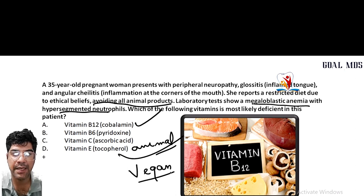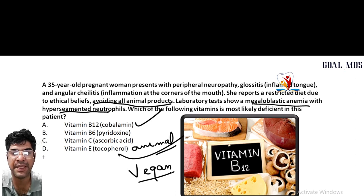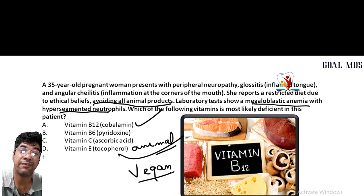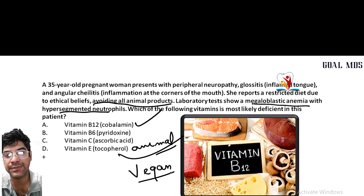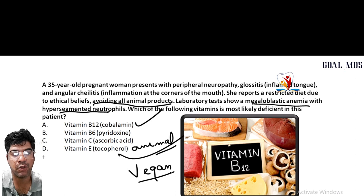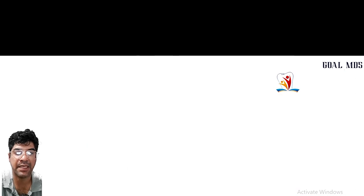Whereas other options — vitamin B6 deficiency can also lead to peripheral neuropathy, but the characteristic findings of megaloblastic anemia and hypersegmented neutrophils point toward B12 deficiency. Vitamin C deficiency causes bleeding gums, easy bruising, and poor wound healing. Vitamin E (tocopherol) deficiency can cause neurological symptoms but is less likely given this clinical presentation.